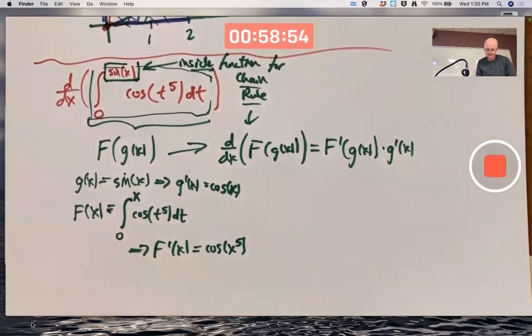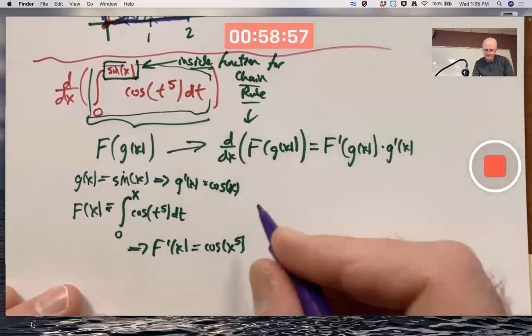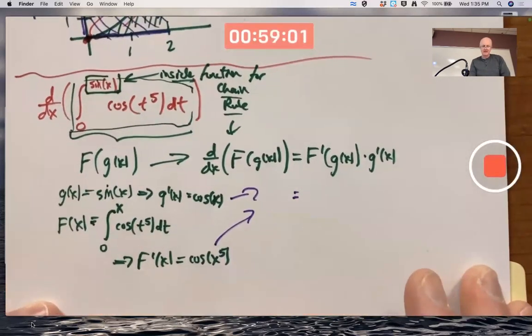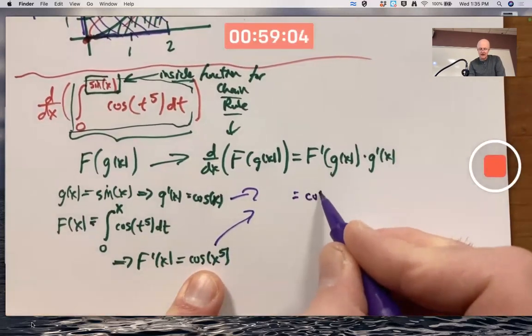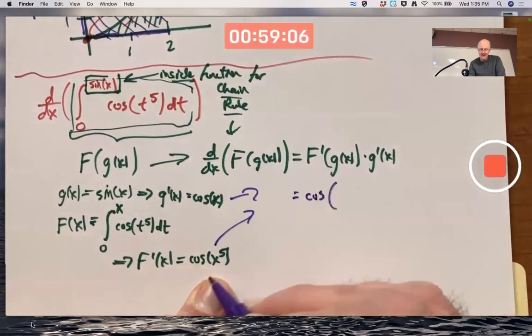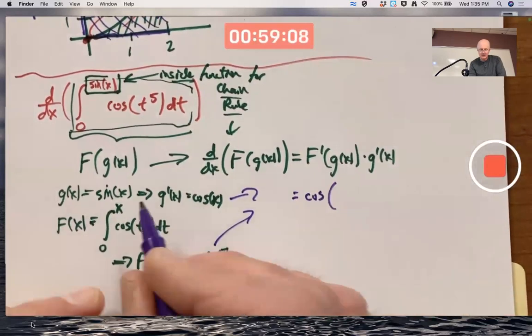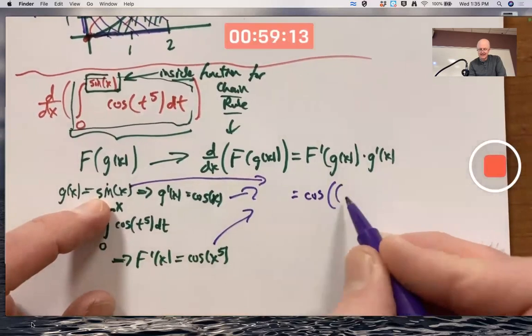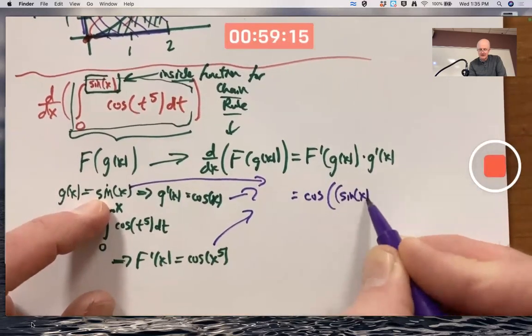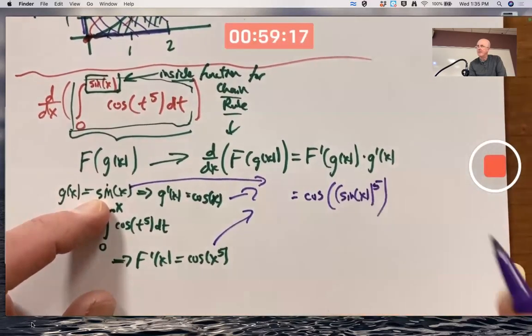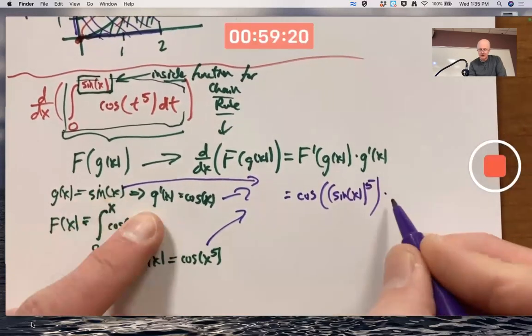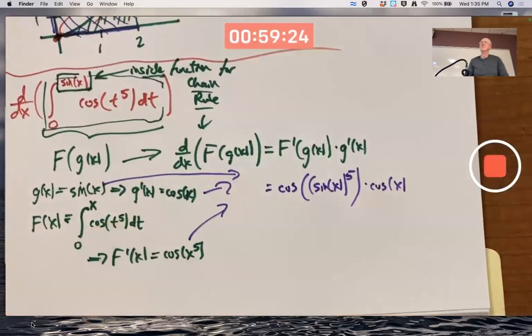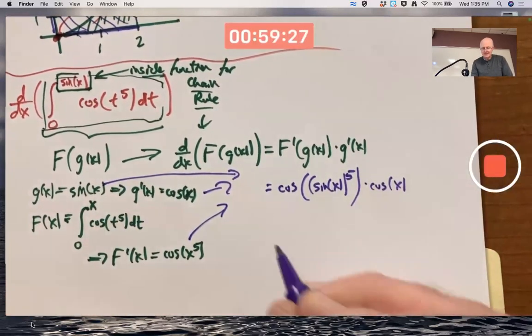Now, combine all this. There is capital F prime, cosine of x to the fifth, but I'm going to replace x with g of x, where g of x is sine x. So I get cosine of sine of x, quantity to the fifth power, times g prime of x, which is cosine of x. And that's the answer.